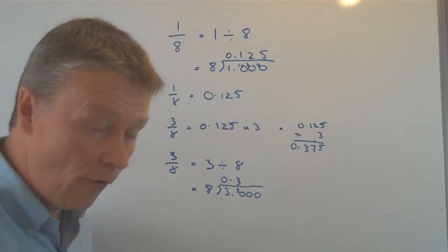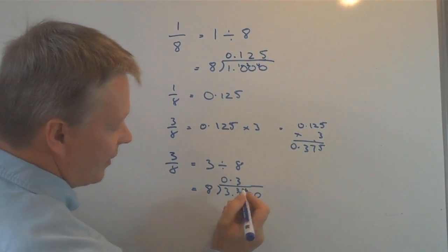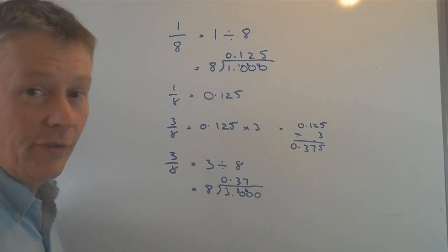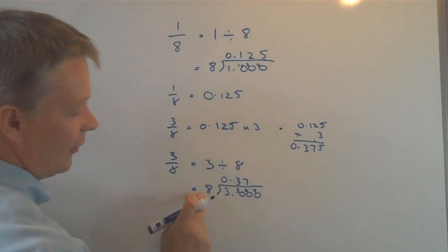Eight into thirty goes three, which is twenty-four, and I've got six left over. Eight into sixty goes seven, because seven times eight is fifty-six, and I've got four left over.